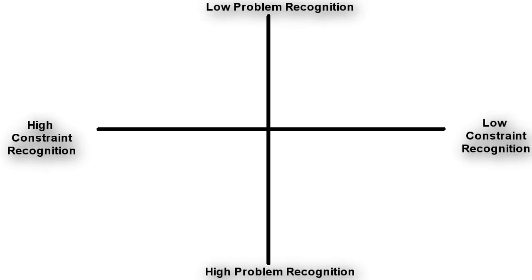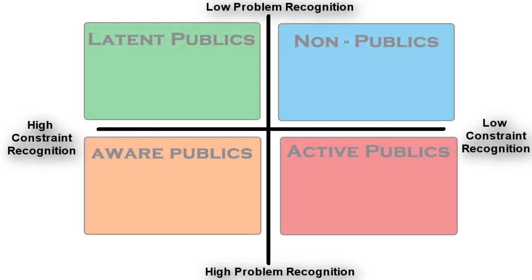When classifying the four different types of publics, it's important to remember these three important factors. The first is: what is the problem recognition — is it high or low for the publics involved? Second is: what is the constraint recognition, or what are the barriers they have — are they high or low? And then third: what is the level of involvement?